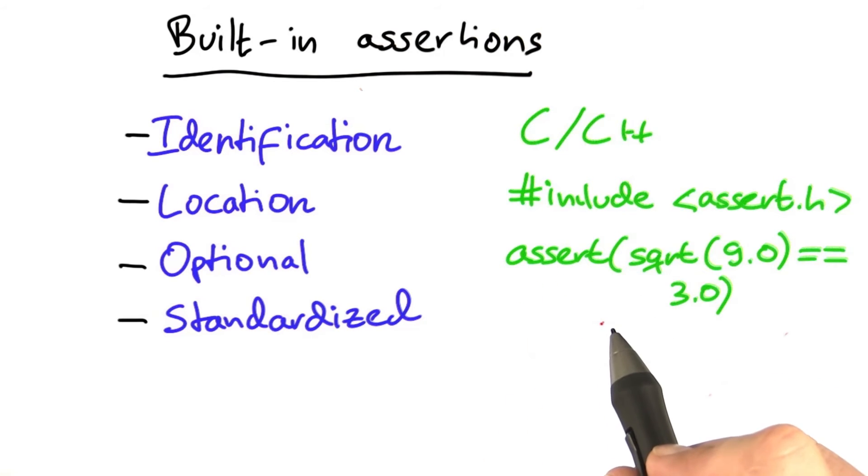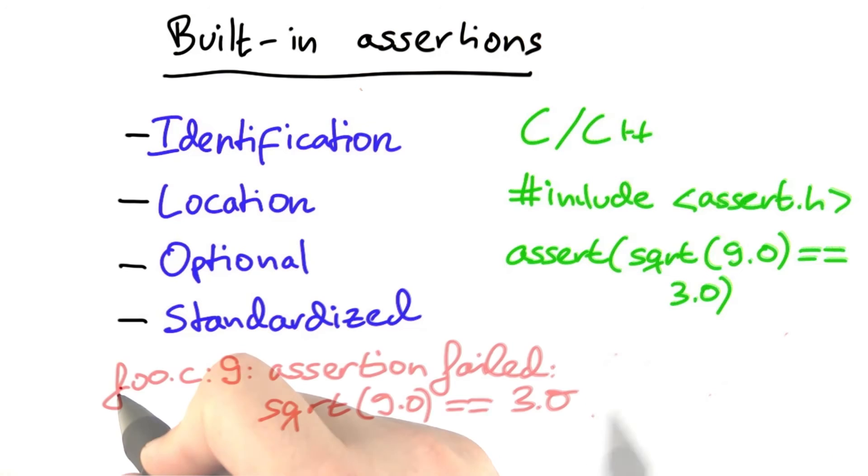If this assertion failed, you're going to get a message on the console right before the program exits. The message will look something like this. There you go.